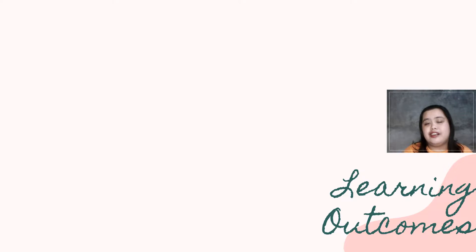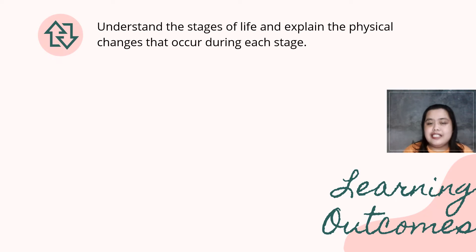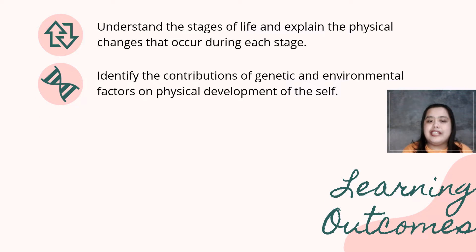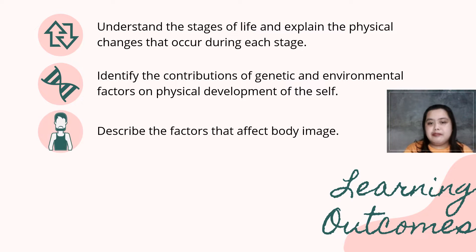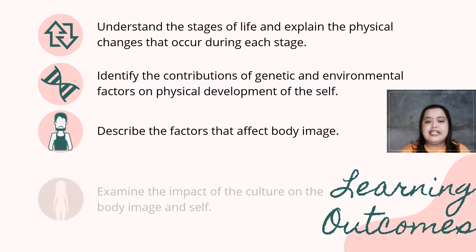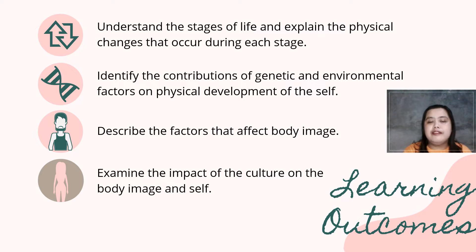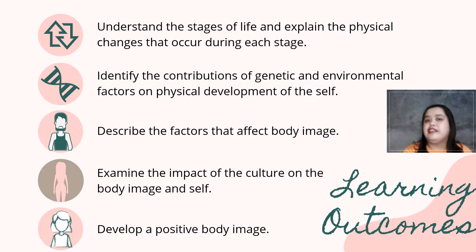Let's start with our learning outcomes. First, to understand the stages of life and explain the physical changes that occur during each stage. Second, to identify the contributions of genetic and environmental factors on physical development of the self. Third, describe the factors that affect body image. Fourth, examine the impact of culture on body image and self. And lastly, develop a positive body image.